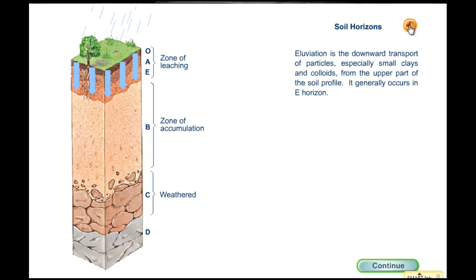Eluviation is the downward transport of particles, especially small clays and colloids, from the upper part of the soil profile. It generally occurs in the E horizon.